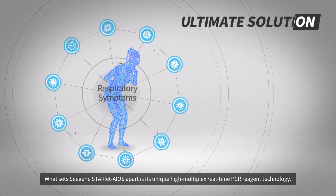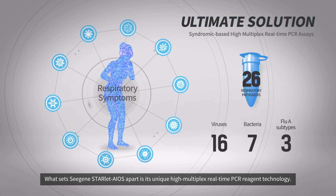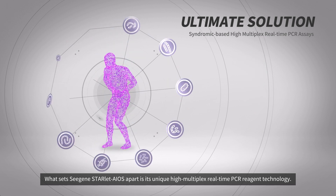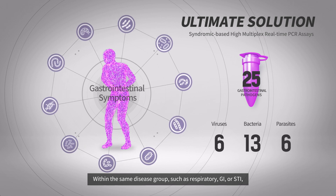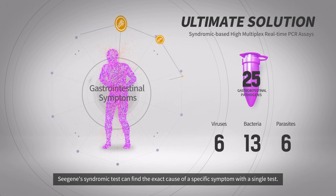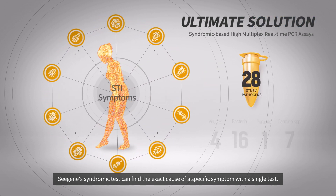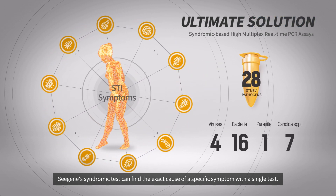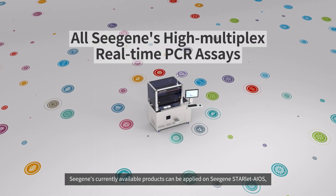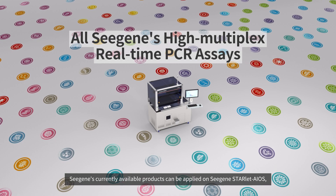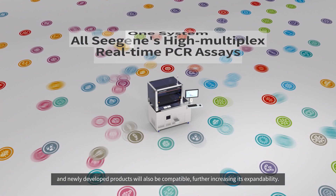What sets C-Gene Starlit Aeos apart is its unique high multiplex real-time PCR reagent technology. Within the same disease group — such as respiratory, GI, or STI — C-Gene's syndromic test can find the exact cause of a specific symptom with a single test. C-Gene's currently available products can be applied on C-Gene Starlit Aeos, and newly developed products will also be compatible, further increasing expandability.